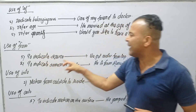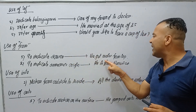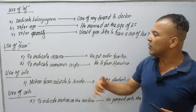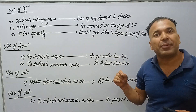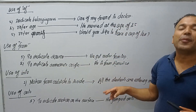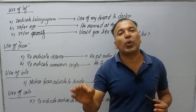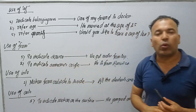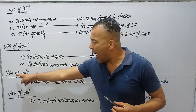The preposition FROM is used to indicate source. For example: 'We get water from the tap.' The tap is the source. FROM is also used to indicate someone's origin. For example: 'He is from America.' America is the origin.